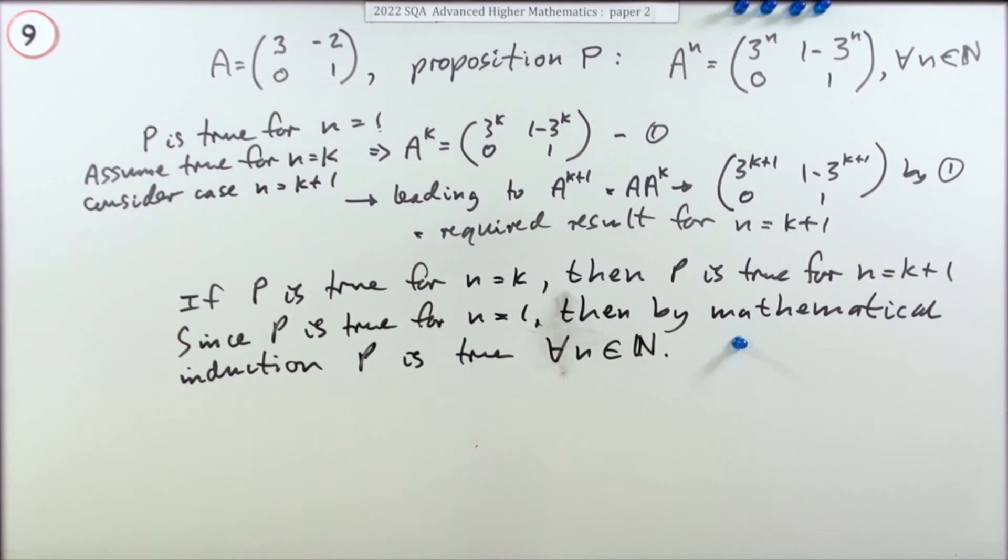After you put that big bit down you get the final mark. The reason being, this step here: if it's true for one then this says it's true for two. If it's true for two it's true for three. If it's true for three it's true for four, and so on.